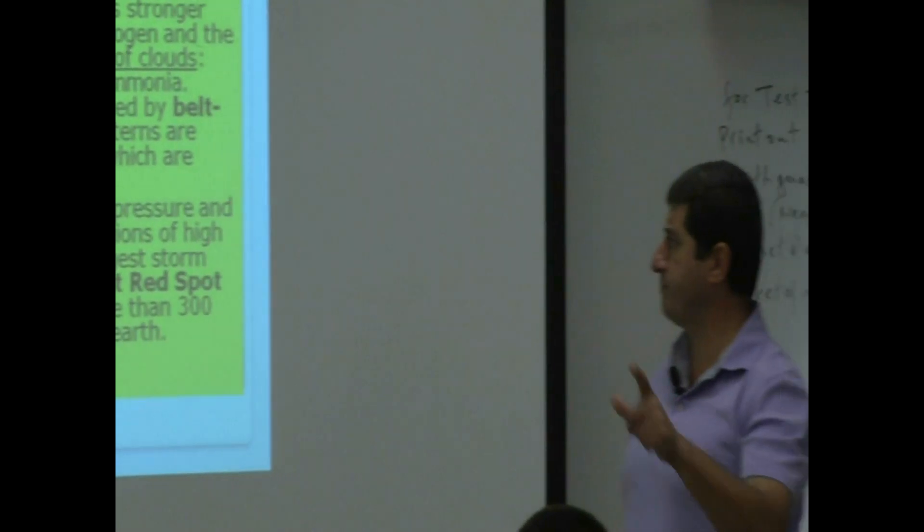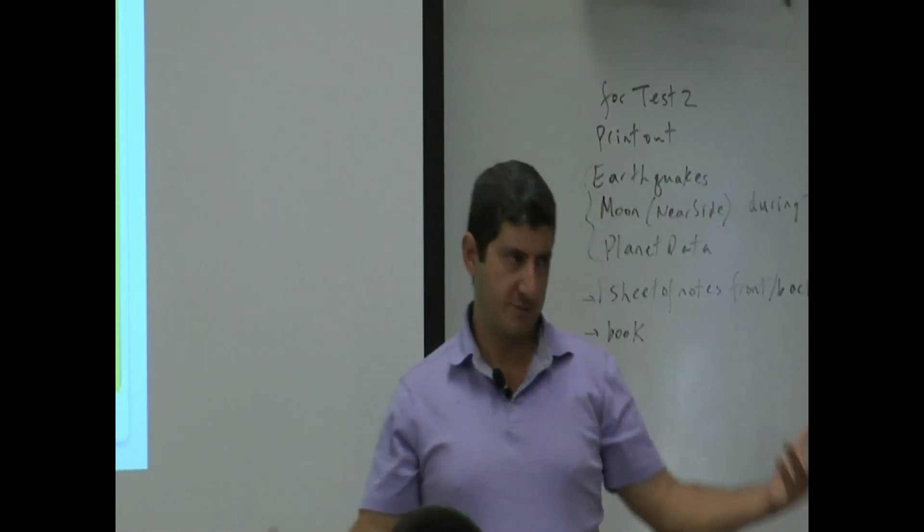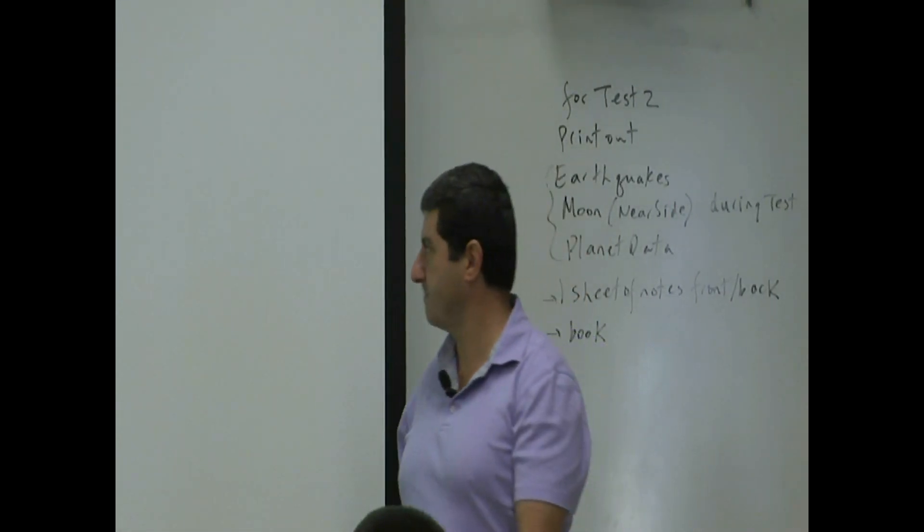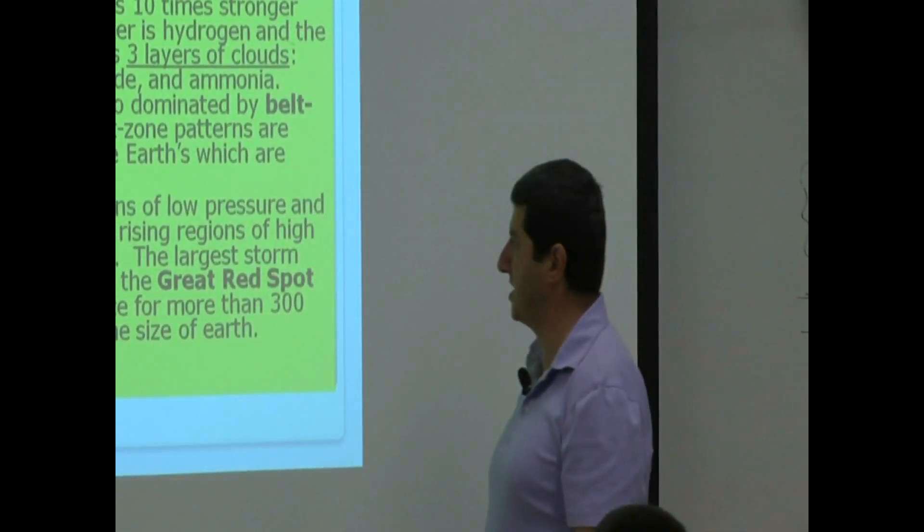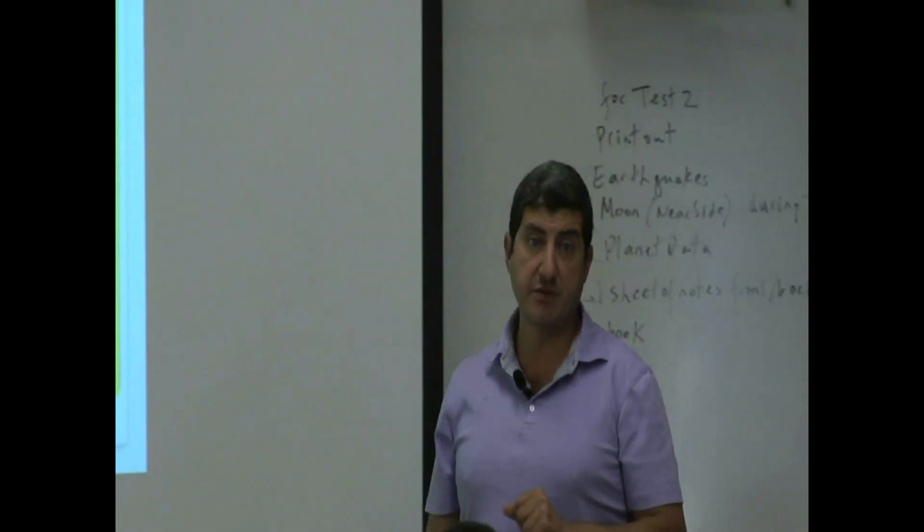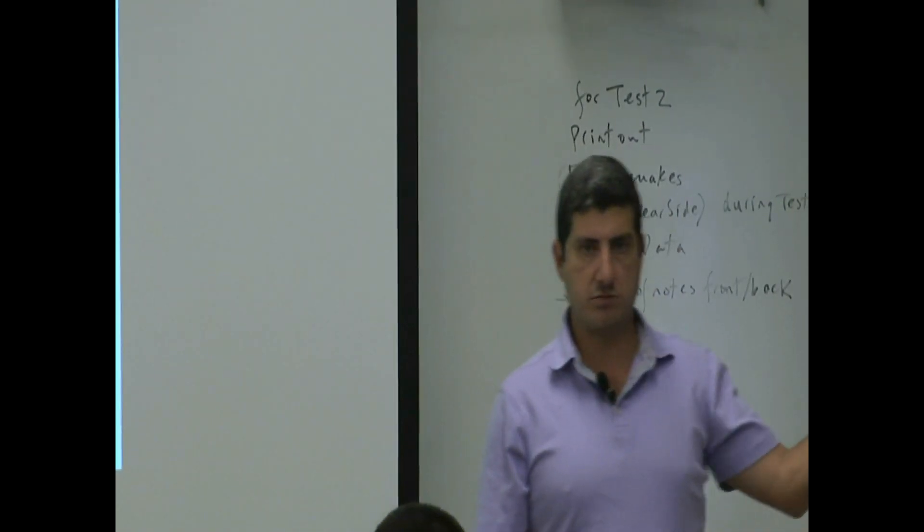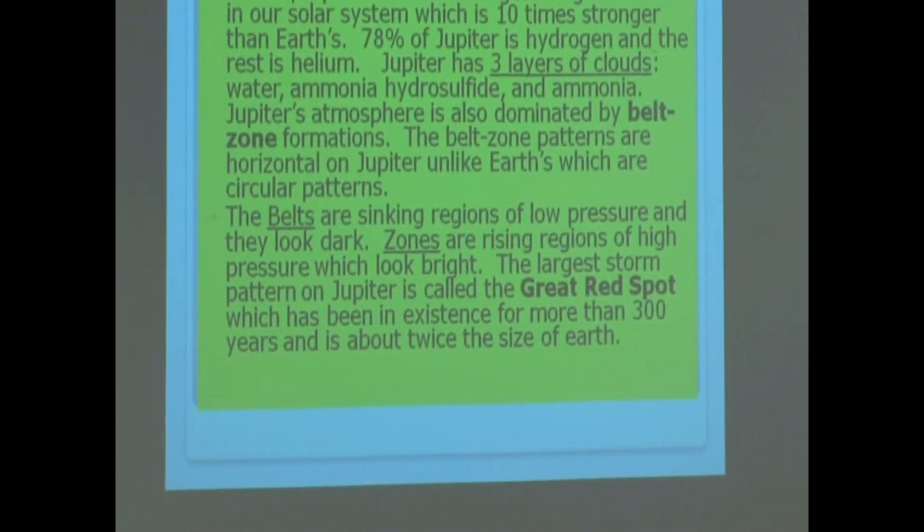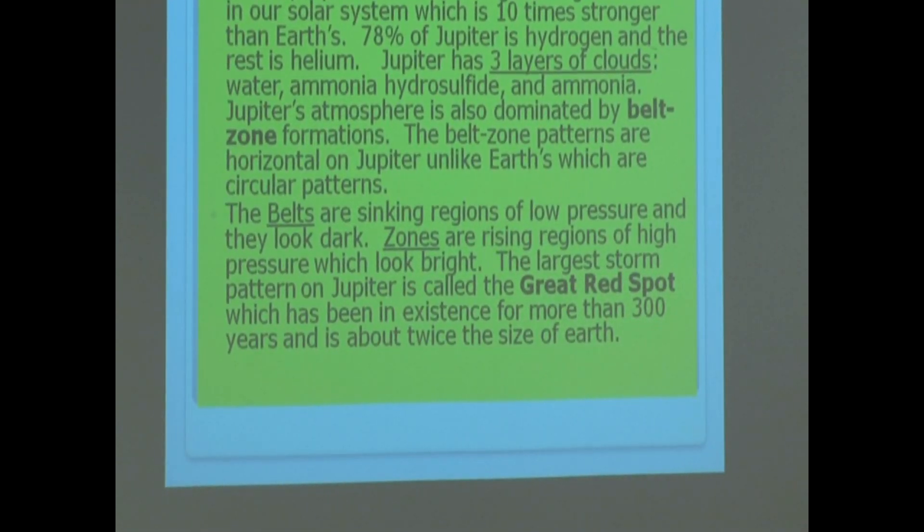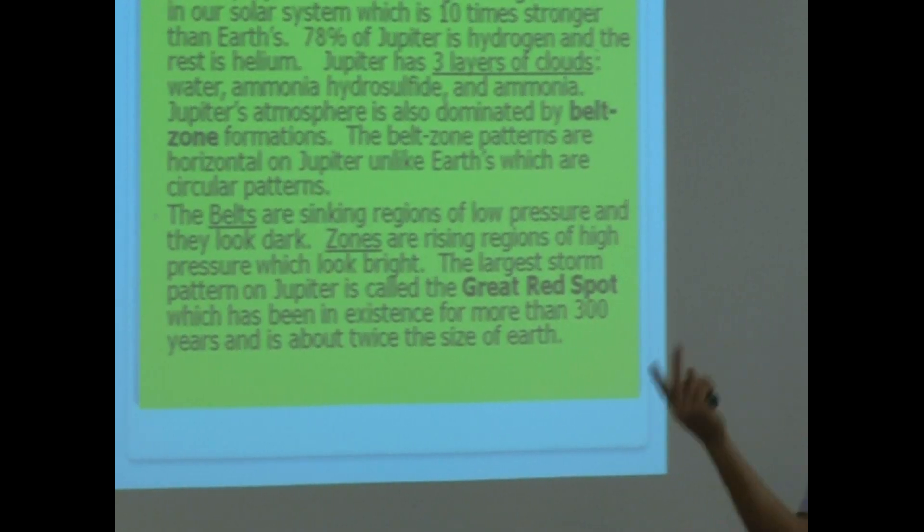The largest storm pattern on Jupiter is called Great Red Spot, which has been in existence for more than 300 years and is about twice the size of Earth. Huge. And it's still going on, right? Because the Jupiter doesn't have a surface like a continent on Earth. The continent slows down the hurricane pattern, right? But this one can last for years and years and years and years.